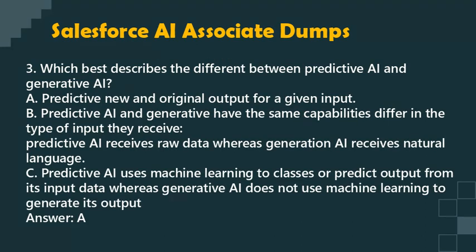Question 3: Which best describes the difference between predictive AI and generative AI? a. Predictive AI generates new and original output for a given input. b. Predictive AI and generative AI have the same capabilities but differ in the type of input they receive — predictive AI receives raw data whereas generative AI receives natural language. c. Predictive AI uses machine learning to generate output data whereas generative AI does not use machine learning to generate its output. Answer: A.